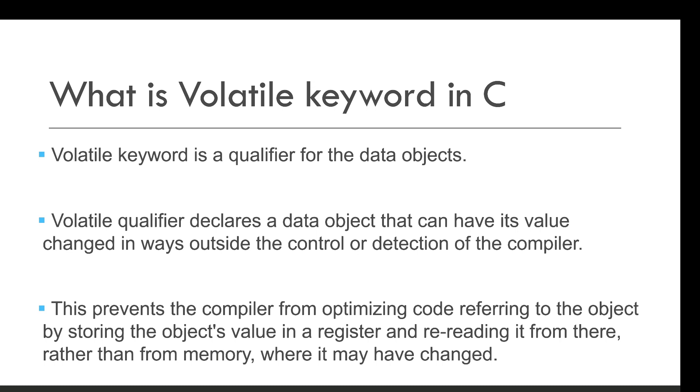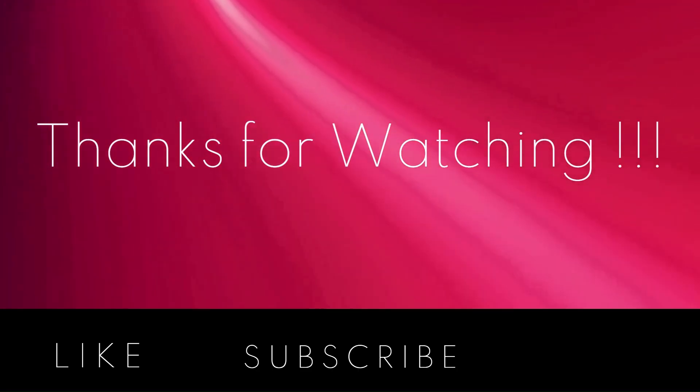In short, the volatile qualifier prevents compiler optimization of variables by ensuring memory access of the volatile variable is always from its actual defined memory location. We'll see more in depth about this volatile qualifier in our next video. Thank you for watching.